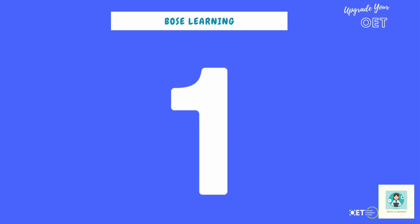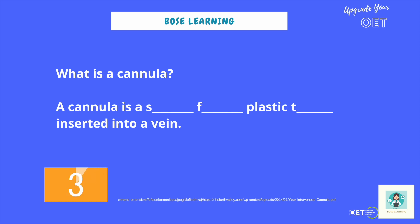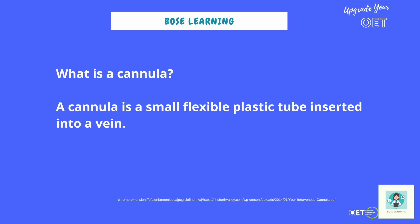Question number one: What is a cannula? Try and fill in these gaps. So what you can say here is that a cannula is a small flexible plastic tube inserted into a vein. I'm an English teacher, not a medical healthcare professional, so my information comes from nhsforthevalley.com — I've put the URL below and I'll stick it in the info box as well.